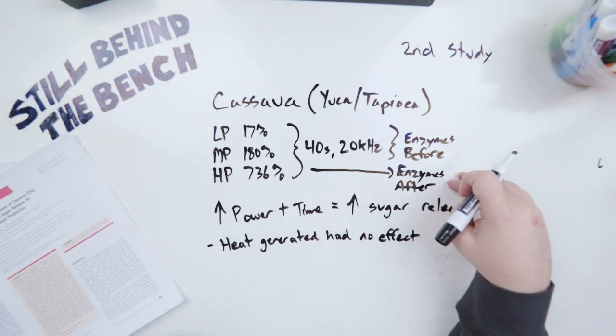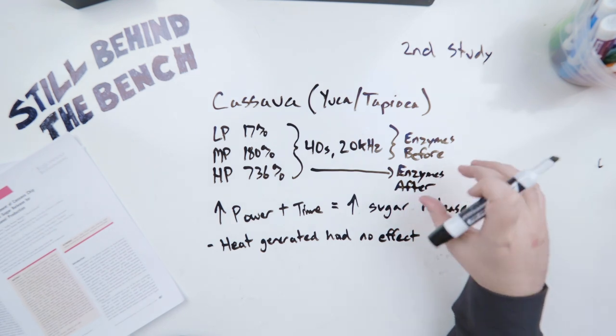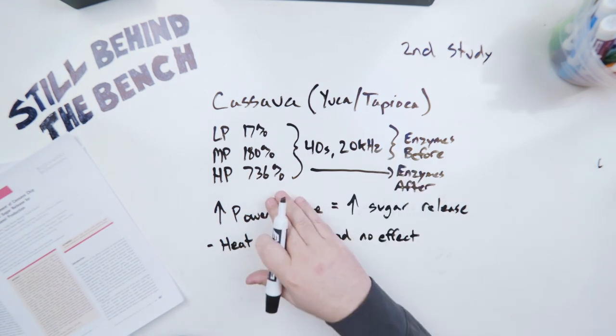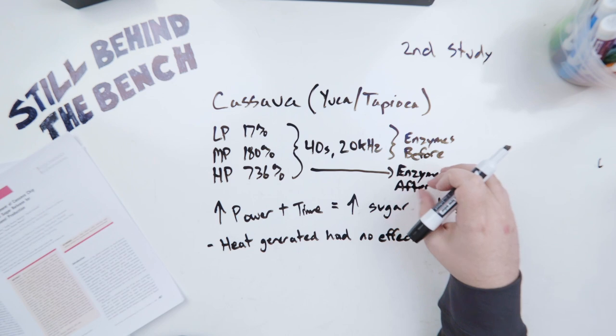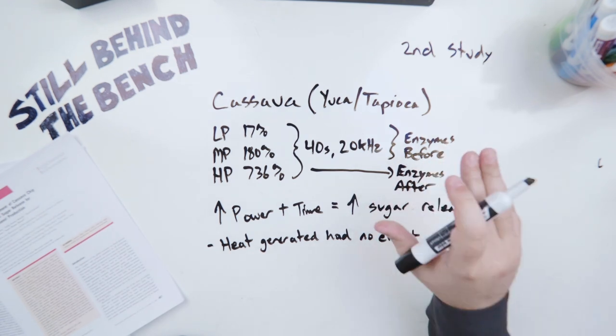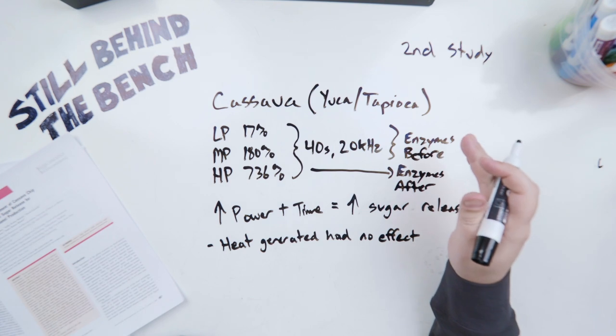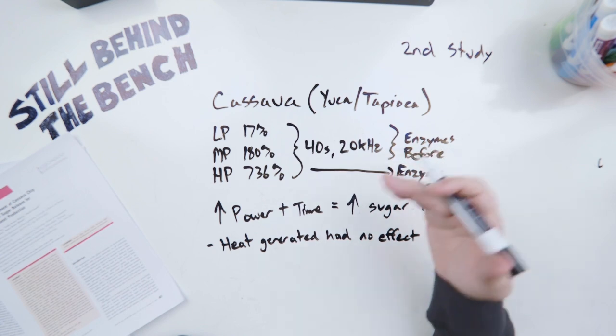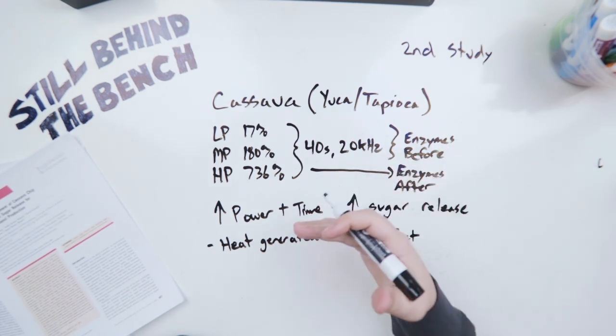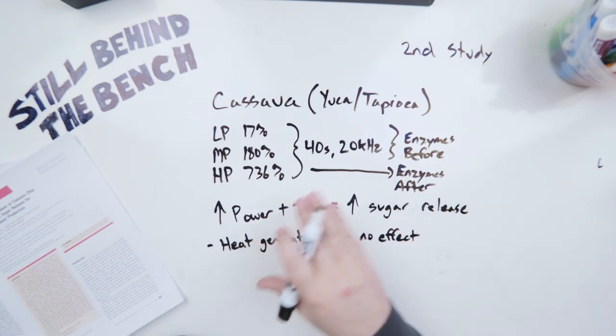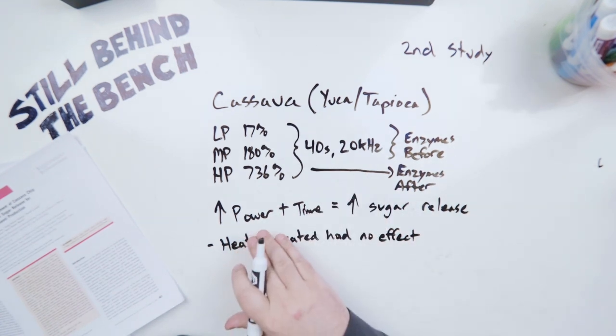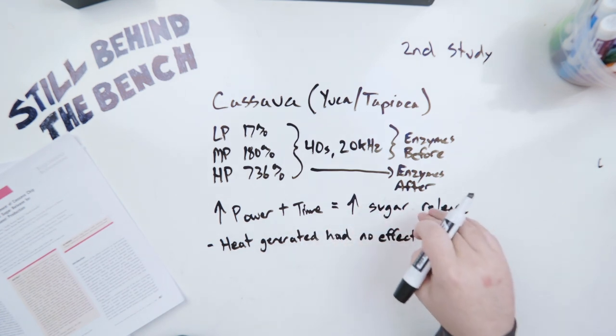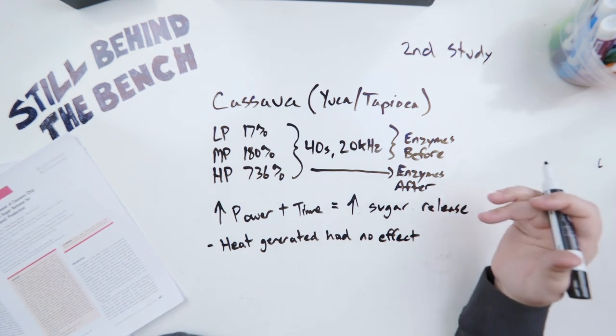And then high power they had 736% increase in sugars after 40 seconds 20 kilohertz but this time they added the enzymes after sonication. So again they find that high power can denature the enzymes. It works so well in breaking up the cell structures, breaking the starches away that in this case with the cassava even though they added the enzymes after it still worked amazingly well. So it seems to show that for cassava and probably other tubers or possibly other tubers that it works even better than with corn. They also showed that with the cassava chips that increases in power and time had a directly proportional increase with the amount of sugar that was released.